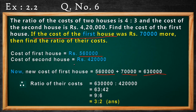The cost of the second house remains the same. Now let's find the ratio of their costs. The cost of the first house is 6,30,000 and the cost of the second house is 4,20,000. Let's minimize: four zeros will be reduced, so we have 63 is to 42. If you divide 63 and 42 by 7, you get 9 is to 6. Then dividing by 3, we get 3 is to 2 as the final answer.